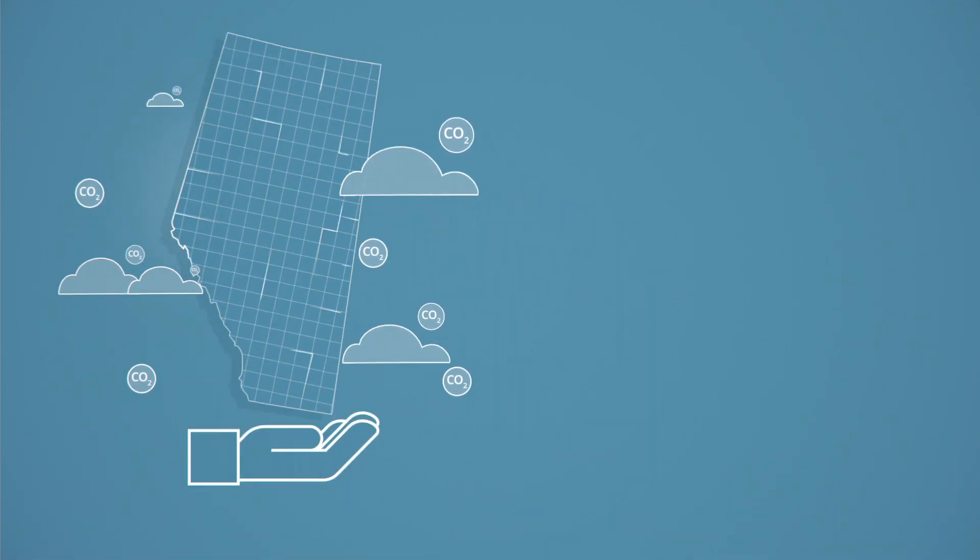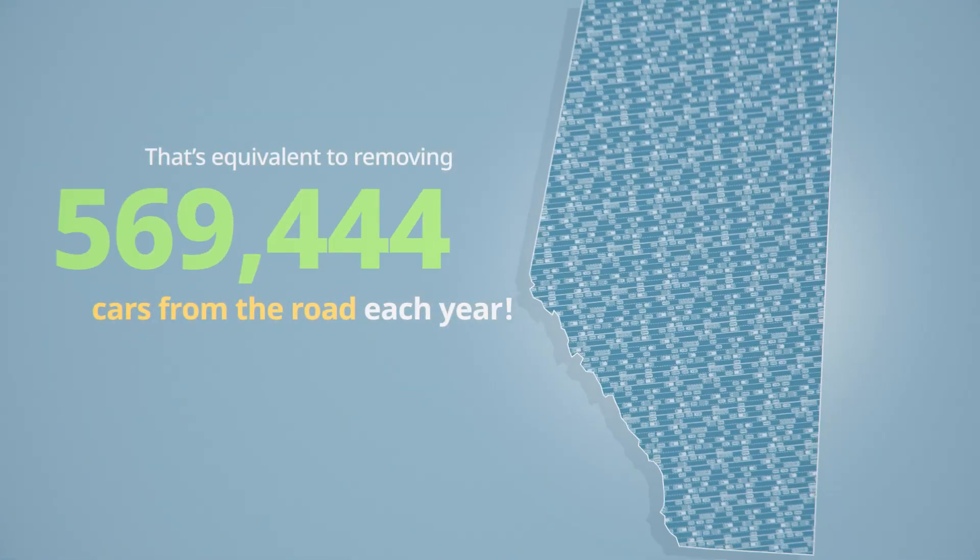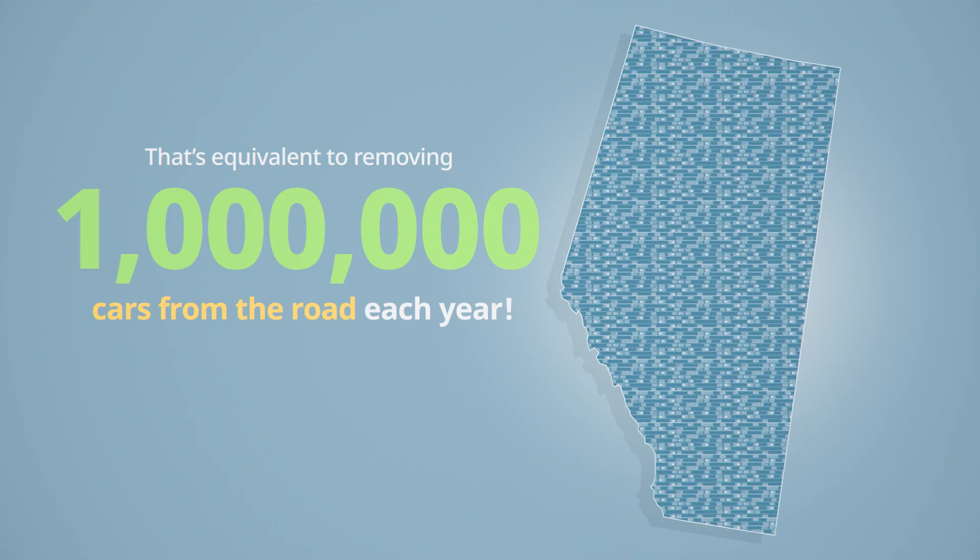As a result, we expect to reduce GHG emissions by 5 megatons per year in Alberta. That's the equivalent to removing emissions from 1 million cars from the road each year.